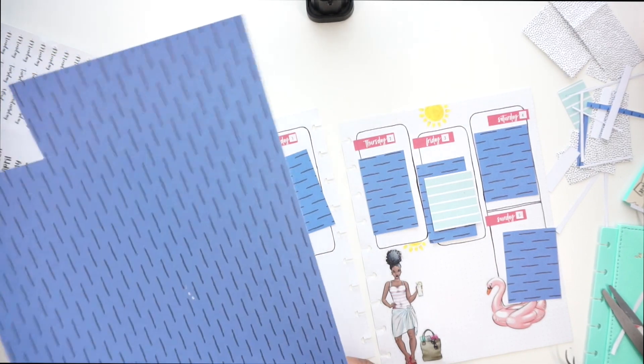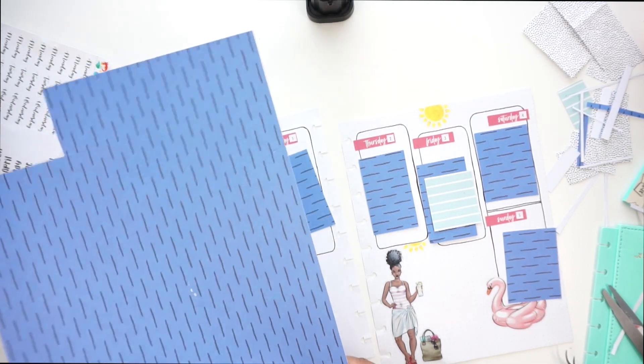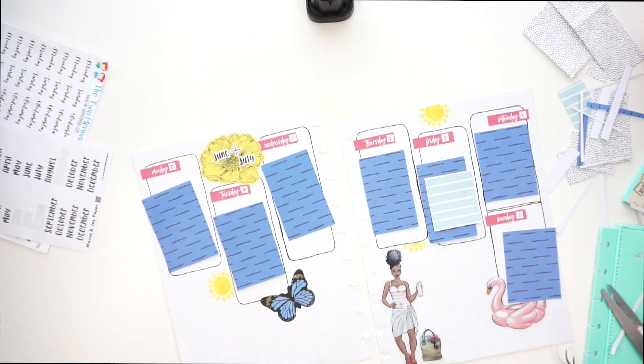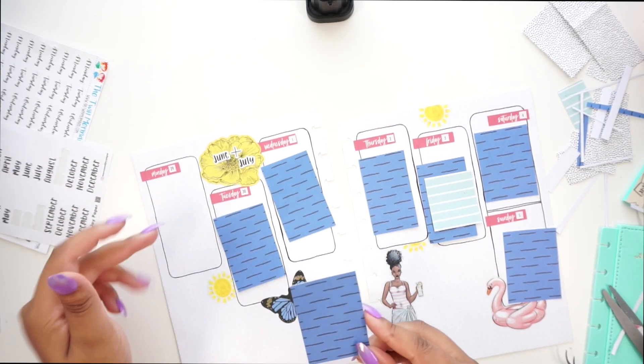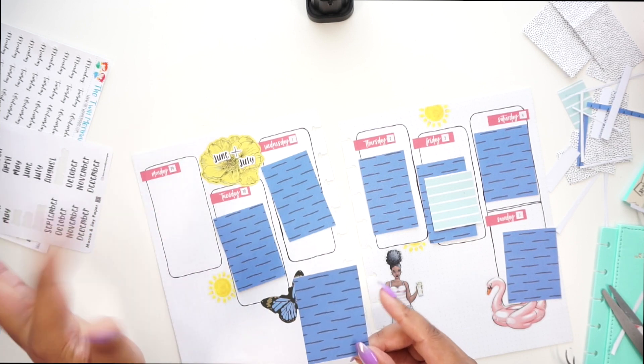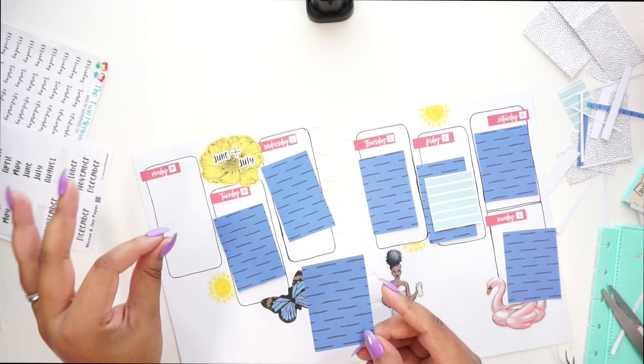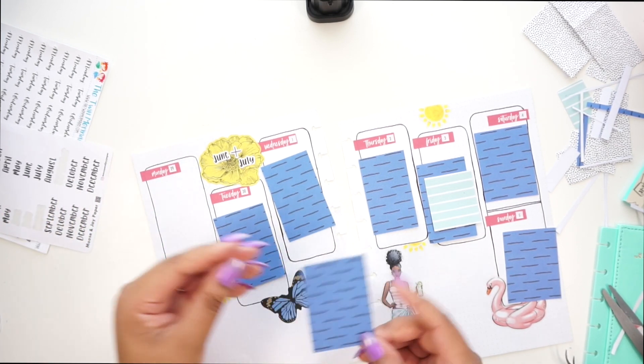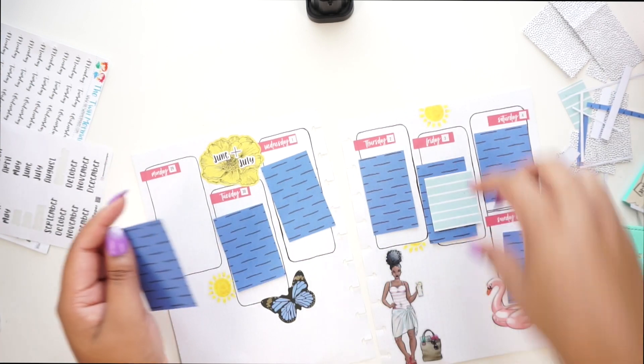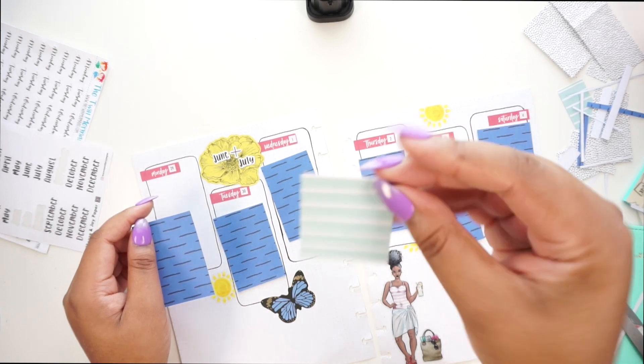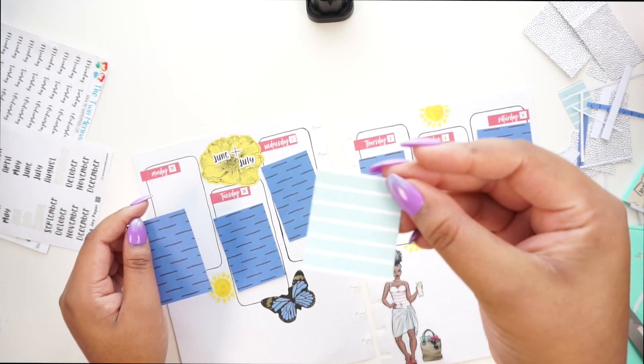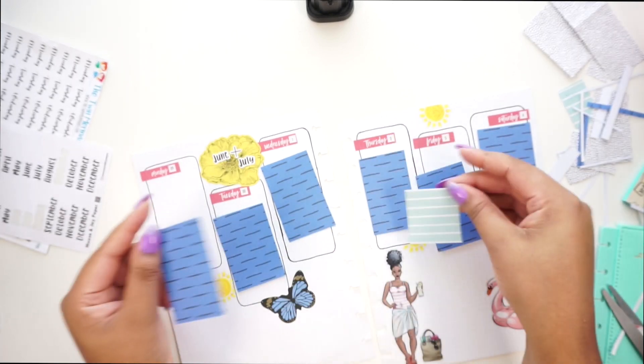So I got some of my decorative scrapbook paper and I made some rectangles. These are going to go behind where I'm going to be writing and stuff. I thought this blue was good because it kind of looks like water, and I think I might use this lighter blue scrapbook paper because it kind of looks like water too.